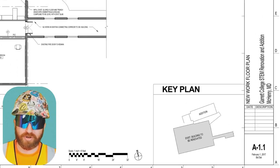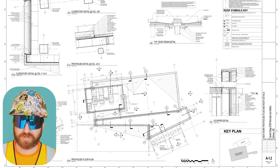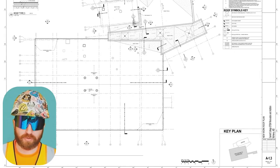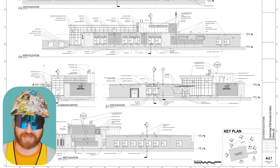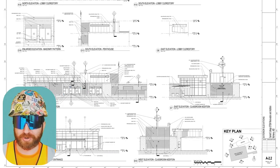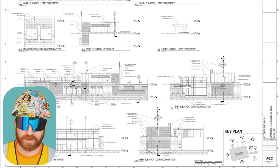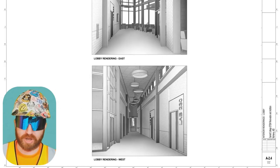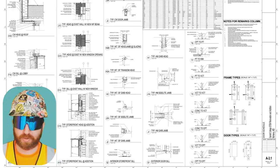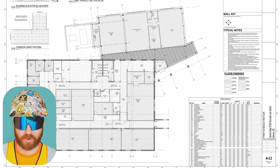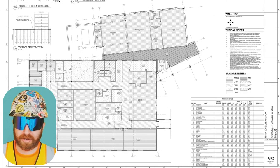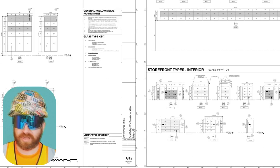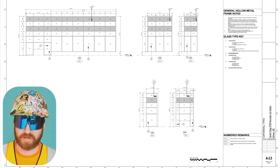A1.1 new work floor plan. A1.2 new work penthouse plan. A1.3 new work floor plan. A2.1 exterior elevations. A2.2 exterior elevations continued. A2.3 axonometric elevations. A2.4 interior renderings of the lobby. A3.1 door schedule. A3.2 finish schedule and plan.